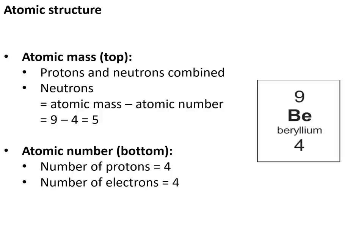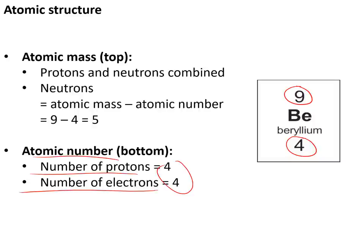The periodic table can help us to determine the structure of atoms. There are two numbers on each element: the atomic mass at the top and the atomic number at the bottom. The atomic number tells us the number of protons and the number of electrons, so for beryllium that is 4. The atomic mass tells us the number of neutrons — atomic mass take away the atomic number, so 9 minus 4 gives us 5 neutrons.